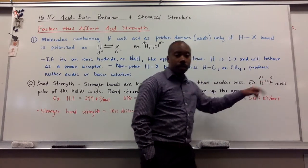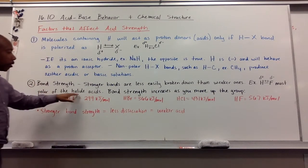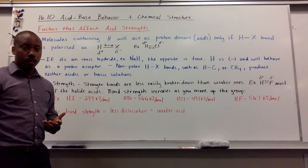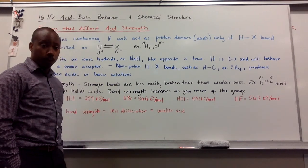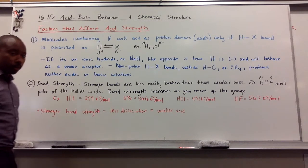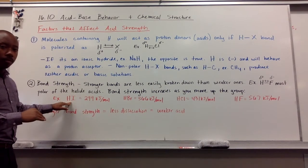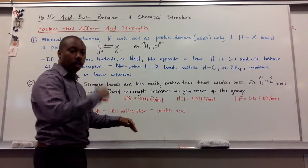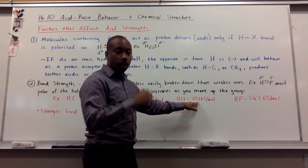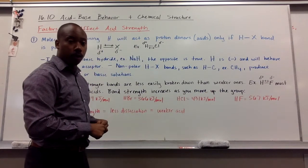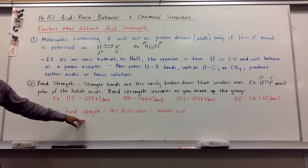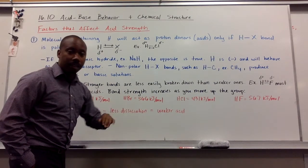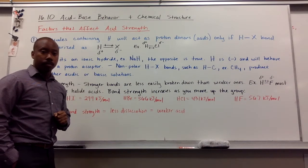An example would be HF. This is an acid, polarized. It is the most polar of the halide acids, meaning group 7A or your halogens. It's the most polar of them because fluorine is the most electronegative. Bond strength increases as you move up the group. So, HI towards the bottom, its bond strength is 299 kilojoules per mole. Go up one to bromine, 366. Up another to chlorine, 431. Up to the top to fluorine, 567 kilojoules per mole. What this means is that the stronger the bond strength, the harder it is to break. Thus, we have less dissociation, meaning we have a weaker acid as we go up the periodic table.